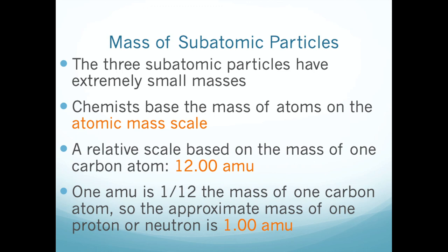Atomic mass units are the scale on which we weigh atoms. Atoms are very tiny and light, so this scale is based on atomic masses. Originally hydrogen was used as the reference, but due to variation and error, people set the scale to carbon — a particular type of carbon atom is defined as having 12 atomic mass units, and everything else is figured out from that. The atomic mass unit roughly corresponds to the number of protons and neutrons in your atom.